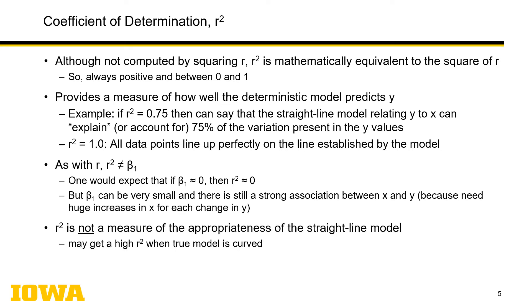One more counterintuitive feature: r-squared is not a measure of the appropriateness of the straight line model. You see this all the time in the literature — 'I have a high r-squared, therefore my model is a good indicator of x versus y.' Maybe within that measured region, but there are many scenarios where you may have a curved relationship and just happen to measure a portion of that curve that is relatively straight, ending up with an r-squared of 0.95, thinking everything's fine. Maybe within that region it's still okay, but you can't say so specifically.